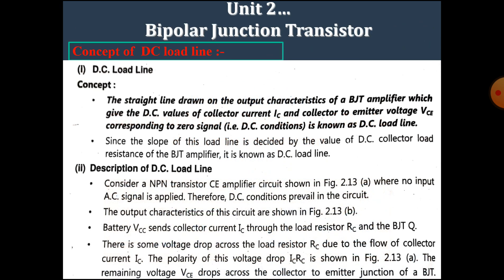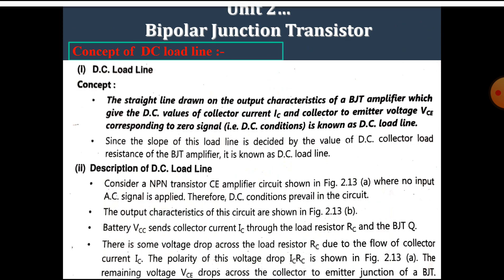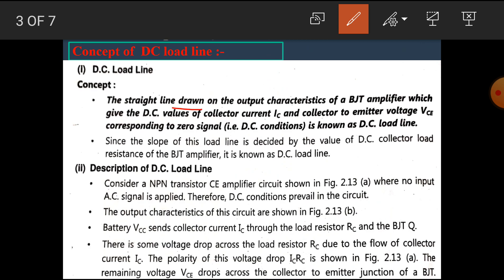Now in this video, we are going to see the concept of DC load line. The DC load line is the straight line drawn on the output characteristics of the BJT amplifier which gives the DC values of collector current IC and collector-to-emitter voltage VCE corresponding to zero signal, i.e., DC condition. The slope of this load line is decided by the value of DC collector load resistance of the BJT amplifier.